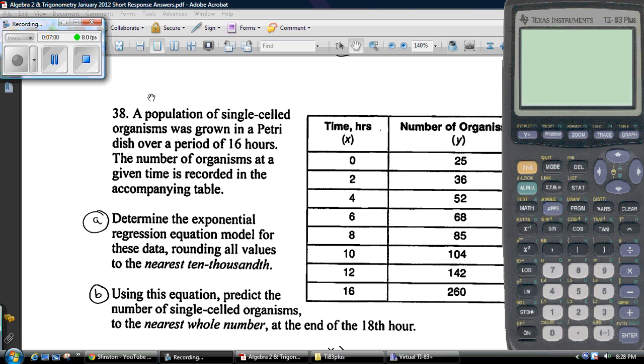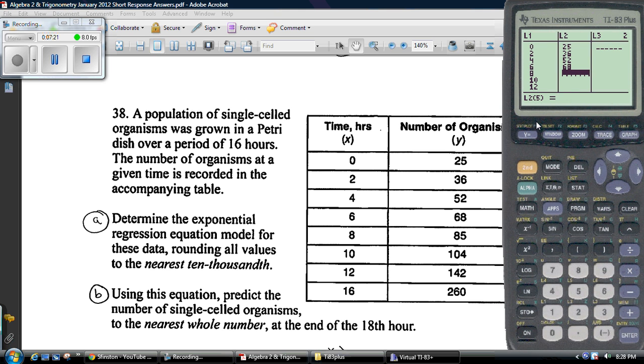Number 38, we're going to have to do a regression. That means we've got to enter it in our calculator, which means we've got to hit stat, edit, and we're going to have to enter these things in. So enter them in. Then we're going to go over into list 2. And then here's what you do. You hit stat, calc, we want a linear regression, we want an exponential regression, exponential regression on L1, L2. Boom.